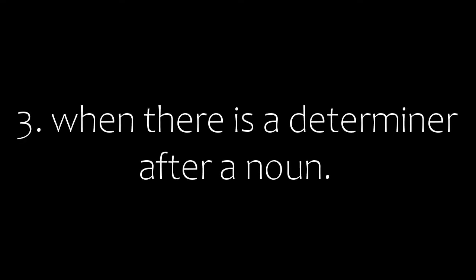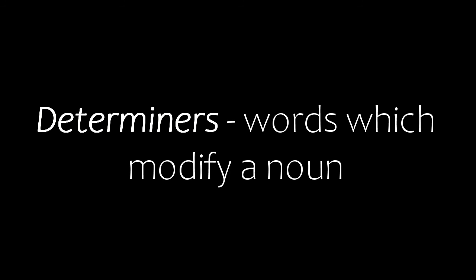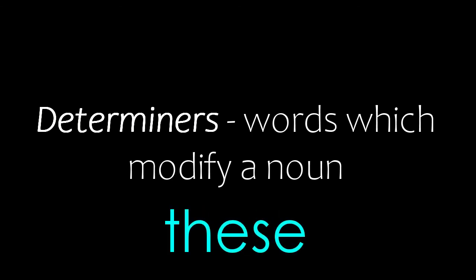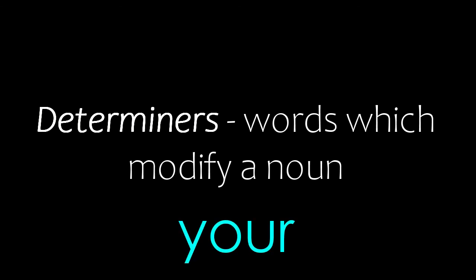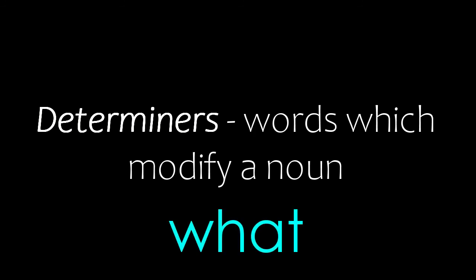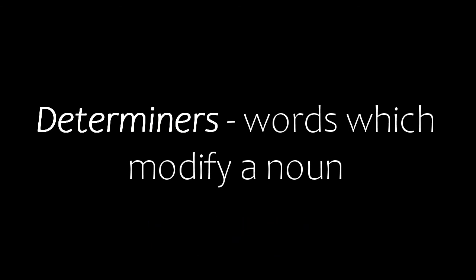Third, we do not use 'A' or 'AN' in a sentence when there is already a determiner before a noun. Determiners are words which modify a noun. Examples of determiners are: this, that, these, those, my, your, his, either, neither, some, any, what, many, whose. For example, 'This is a poem of mine' — we can't say 'This is a my poem.' Another example: 'Have you seen any movie?' — we can't say 'Have you seen a any movie?'